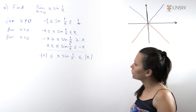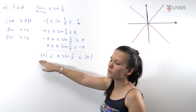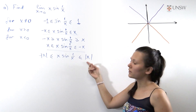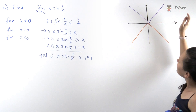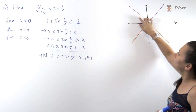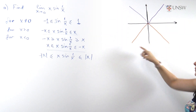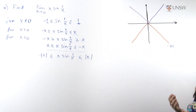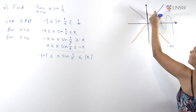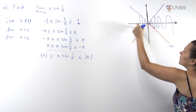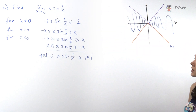So now we have the estimate of our function x sine 1 over x from below by minus the absolute value of x and from above by the absolute value of x. On the graph we have the function absolute value of x and the function negative absolute value of x, and our function x sine 1 over x lies somewhere between them, going something like that. Of course we do not care about the large values of x.